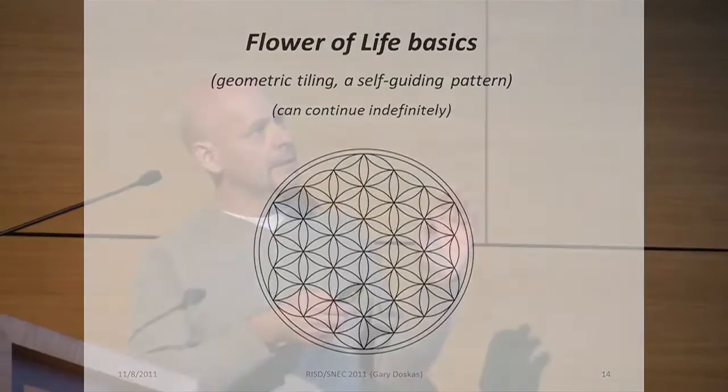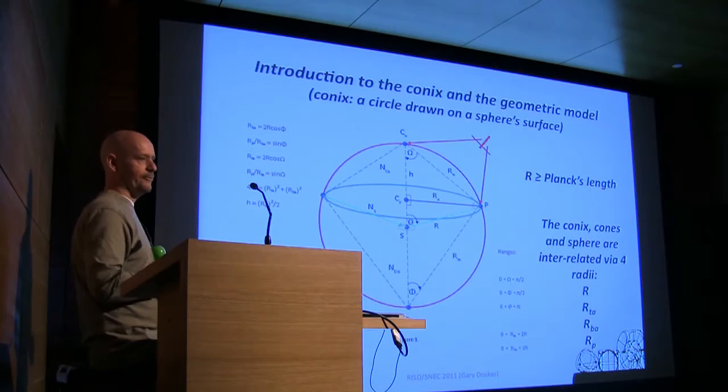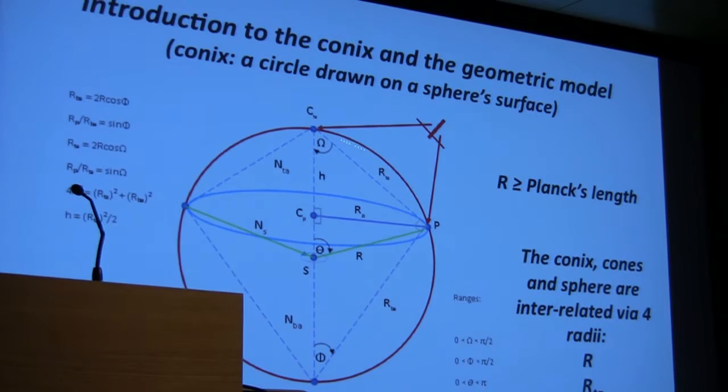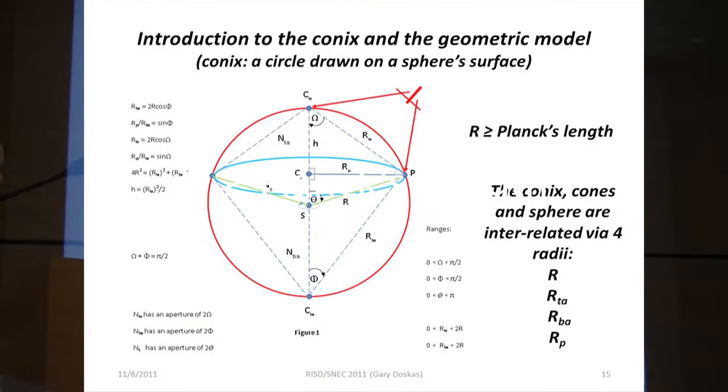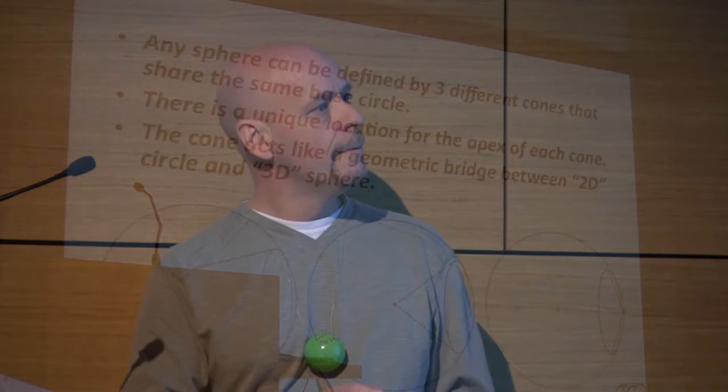Just to set some groundwork, if you look in flatland geometry, Euclidean geometry, this basic relationship here between a hexagon and a circle enables this geometric tiling. You can basically go on indefinitely and make these really cool patterns. So where I defined, I guess what I call here, a new geometric model based on spherical geometry. And it basically revolves around drawing this circle, which I call it a conix to differentiate it from just a regular circle on a flat plane. But what's unique about this conix is that it has actually four radii. It's got two conical radiuses, one at the top, one at the bottom. It's got a planar radius that cuts through the plane.